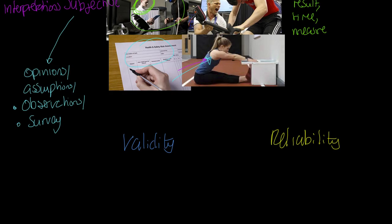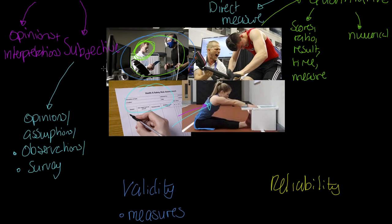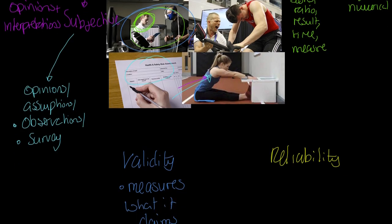Validity means a test measures what it claims to measure. Take a hand grip dynamometer — it claims to measure maximum static strength, but does it do that for the whole body? Arguably not. A vertical jump or sergeant test measures leg power, not whole body power. The sit and reach test measures only lower back and hamstring flexibility. So there can be issues of validity with these tests, whereas a direct gas analysis is a really valid measure — unless perhaps the person isn't a runner.